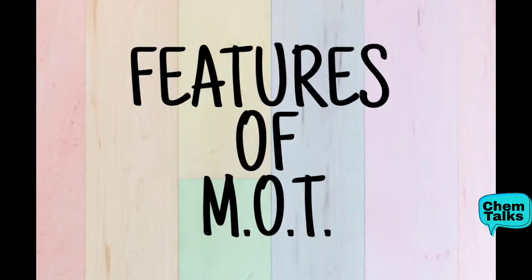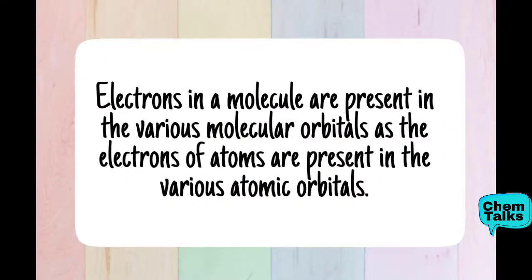If we talk about the features of molecular orbital theory, the first feature states that electrons in a molecule are present in the various molecular orbitals, as the electrons of atoms are present in the various atomic orbitals. Like we assumed in valence bond theory that the electrons are present in atomic orbitals, and we introduced a hybridization concept. The molecular orbital theory says that atoms will exist in atomic orbitals, but after the electrons are present in the molecules, they are present in the molecular orbitals.